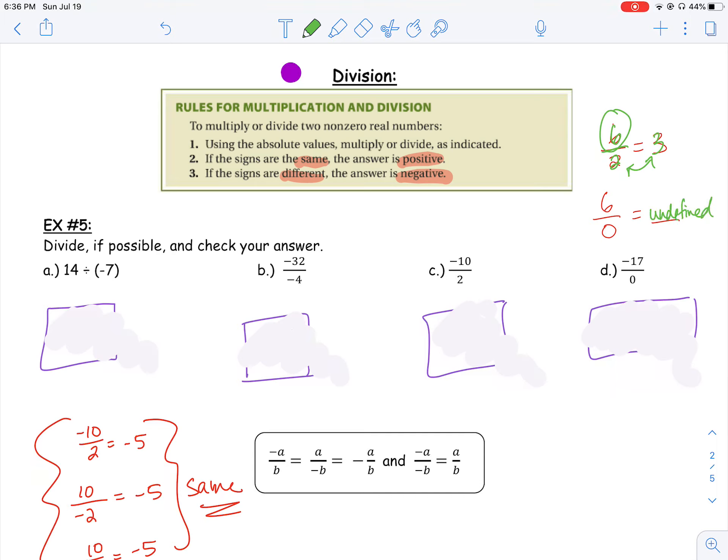We cannot divide something by 0. Now, what if I had 0 divided by 6? What number can I multiply by 6 to give me 0? Well, that's easy. 0, right? So 0 divided by 6 is 0, but 6 divided by 0 is undefined. So be careful. When that 0 is under the line, it's undefined. We cannot divide by 0.